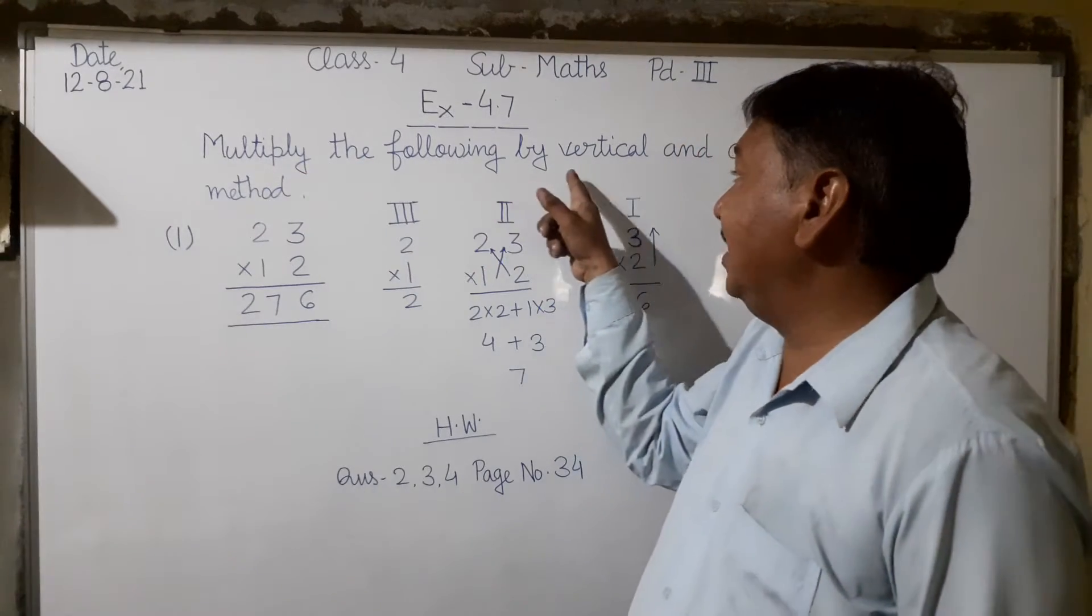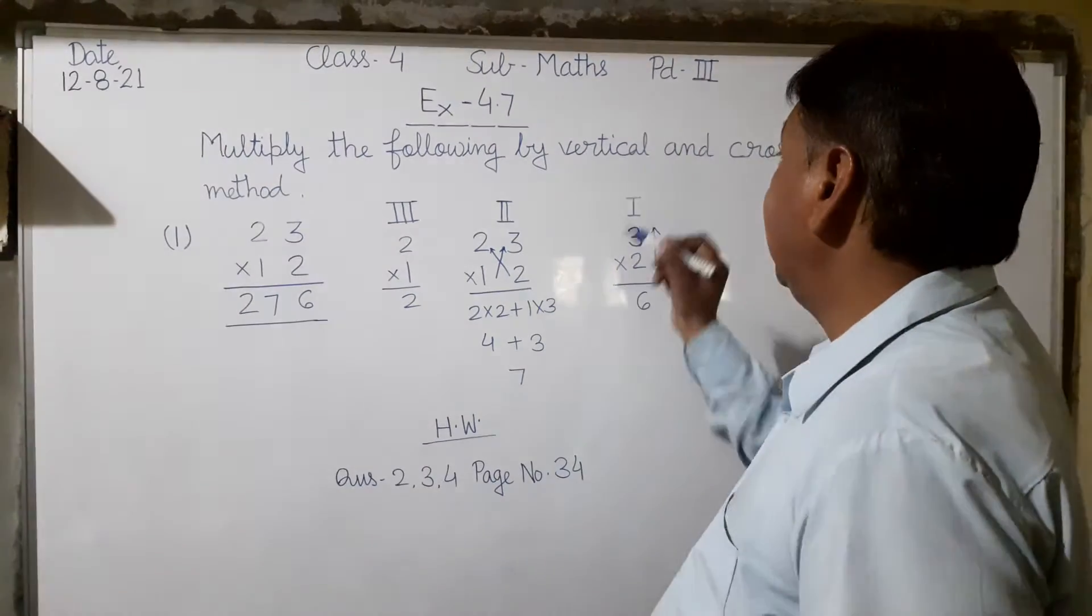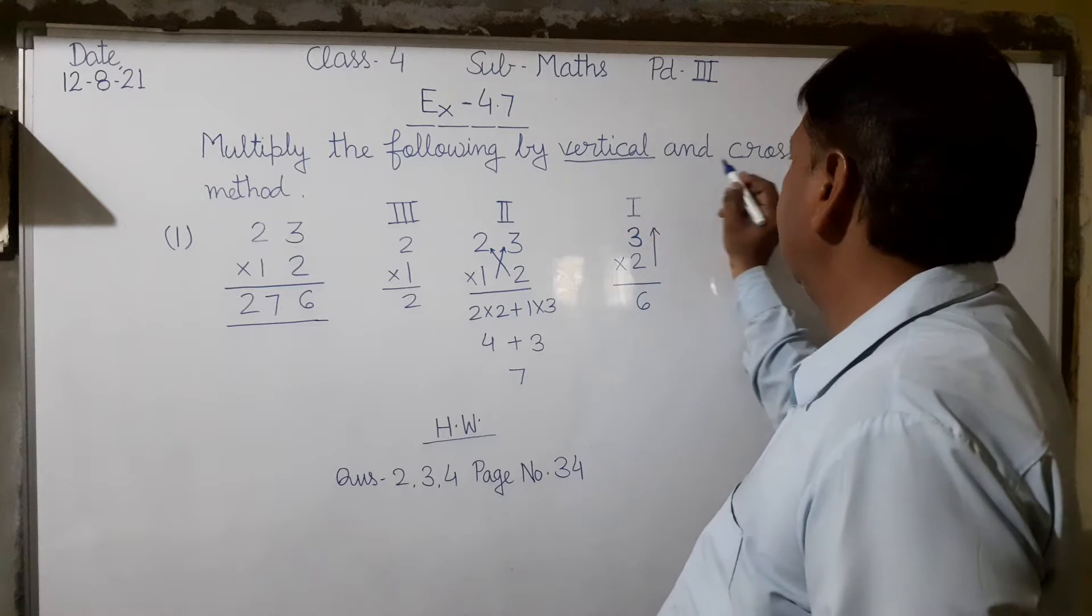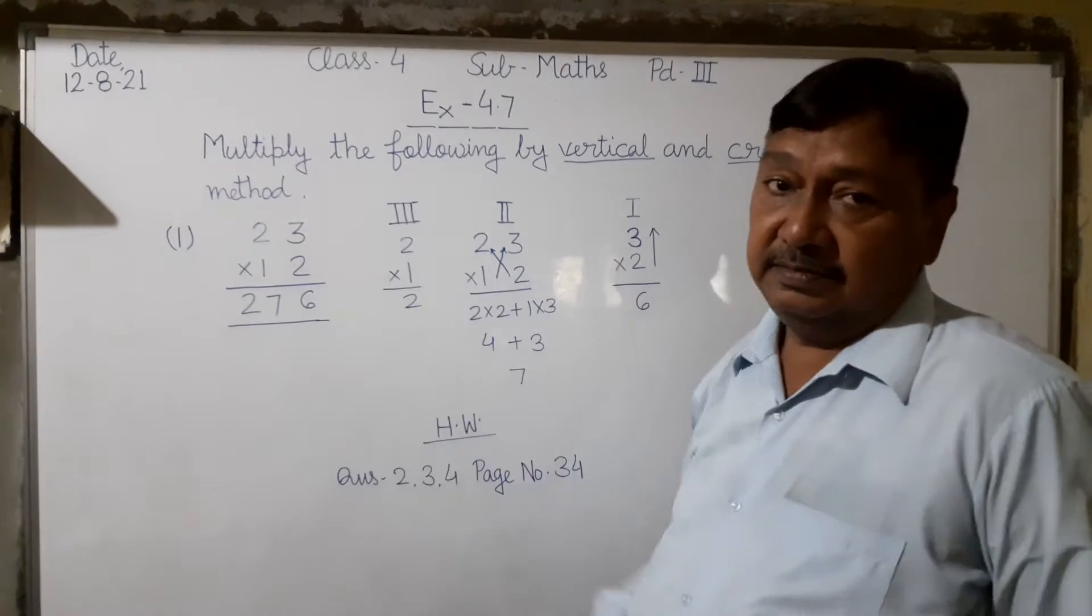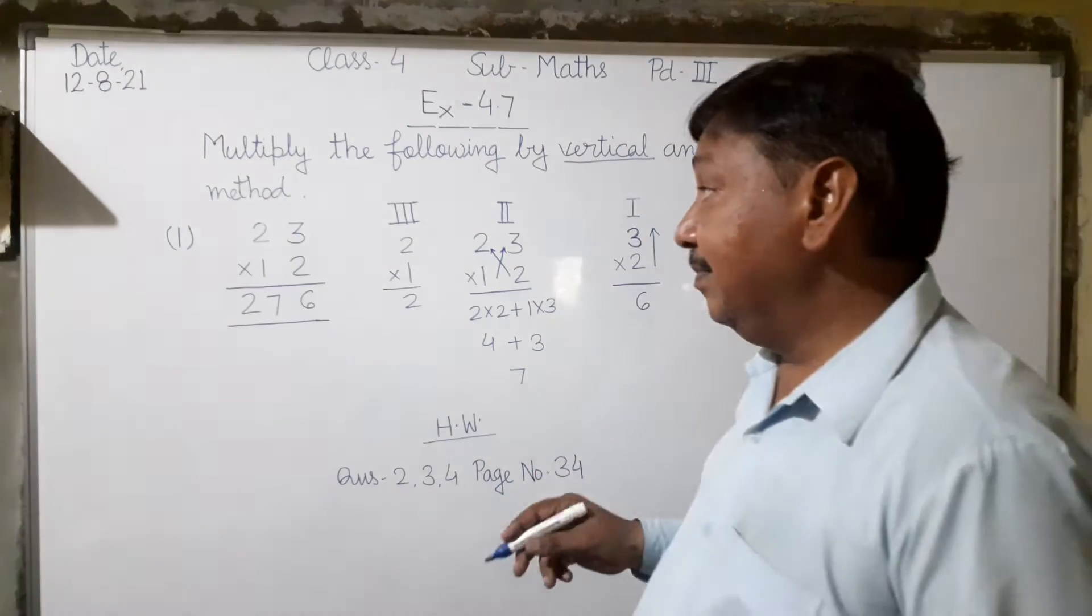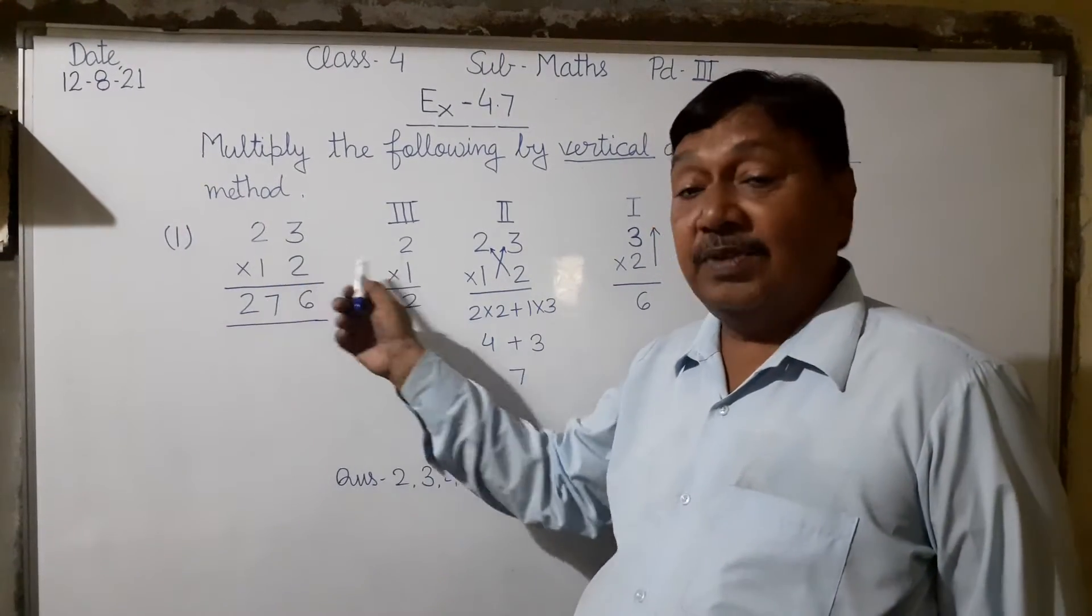Multiply the following by vertical and crosswise method: 23 multiply by 12.